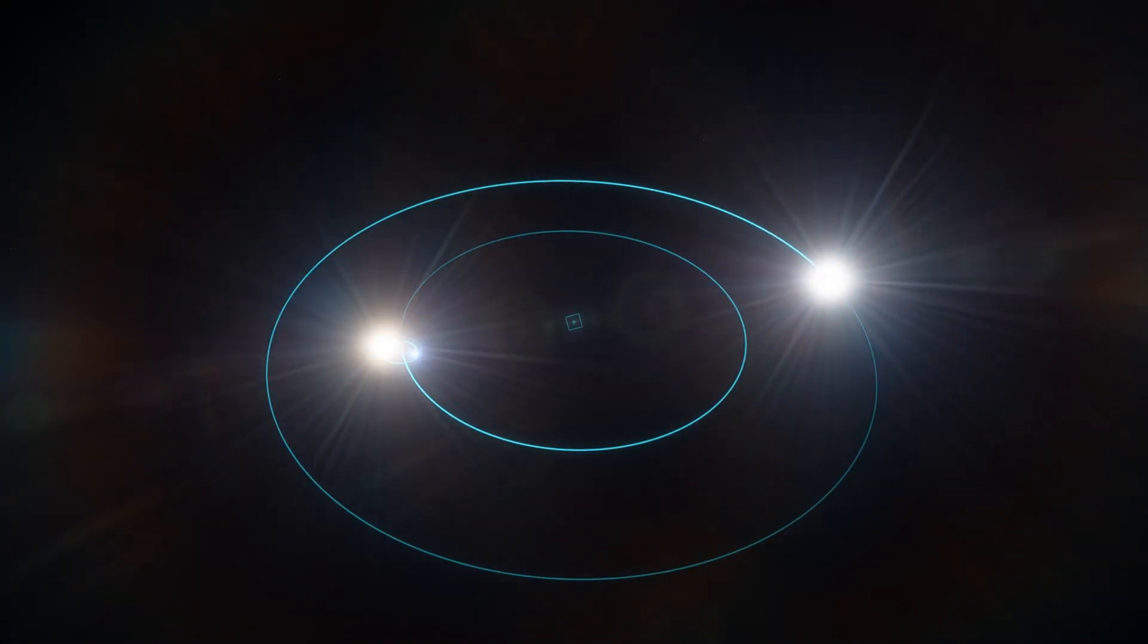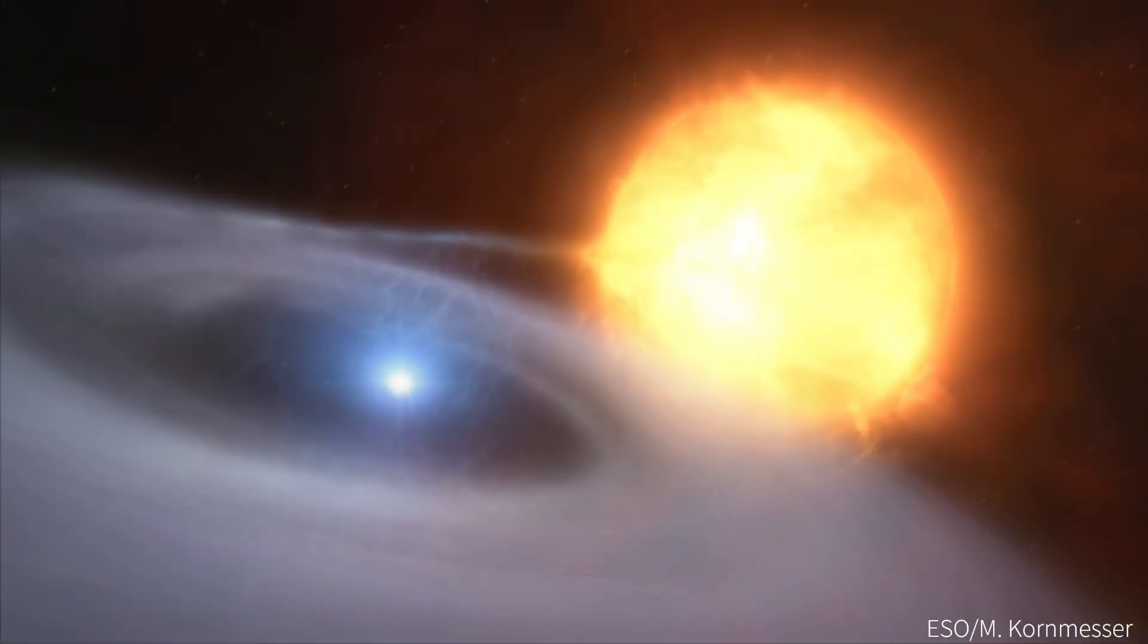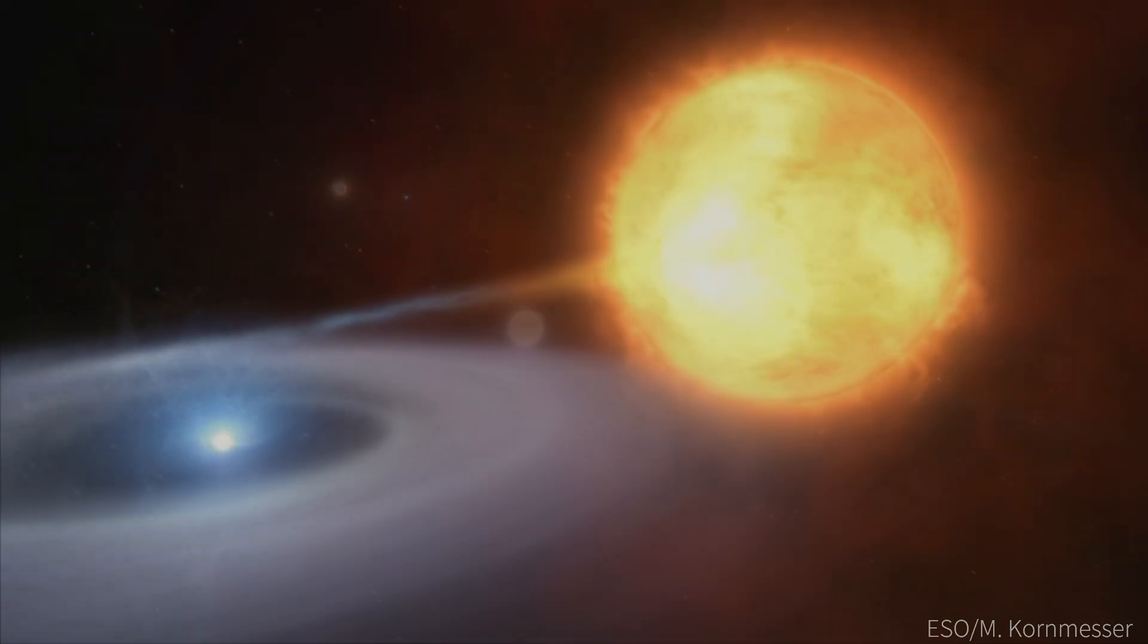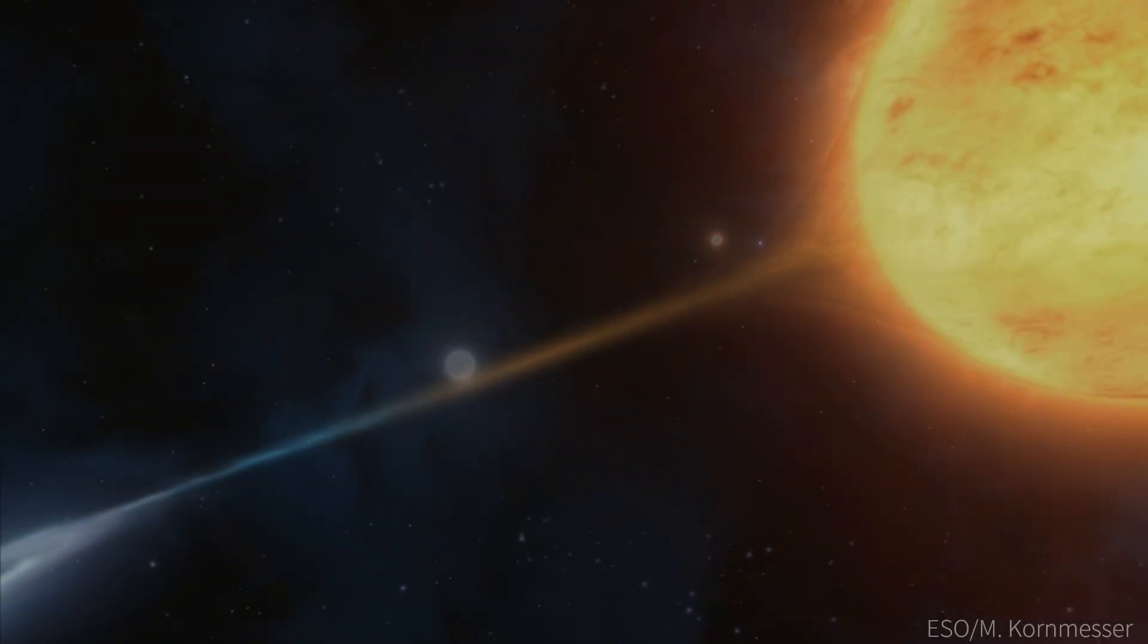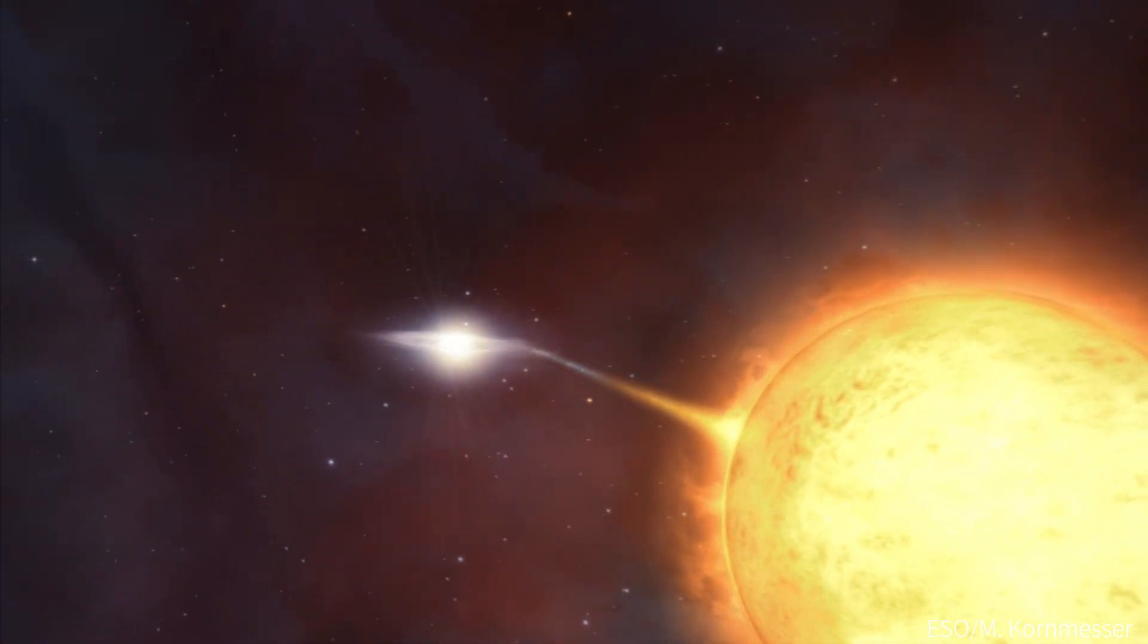The outer main sequence star now expands into a red giant, and the inner binary now feeds on its outer layers, pulling them away and revealing a small helium white dwarf. Some of the mass pulled away is piled on top of the white dwarf, making it exceed the Chandrasekhar limit, and go through a Type Ia supernova, producing the neutron star we observe today.